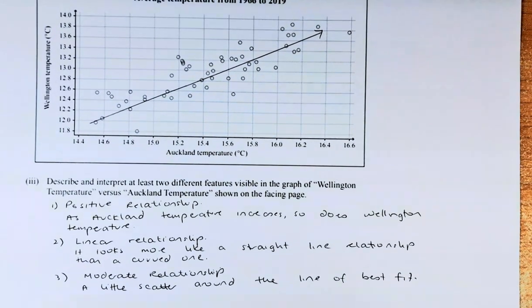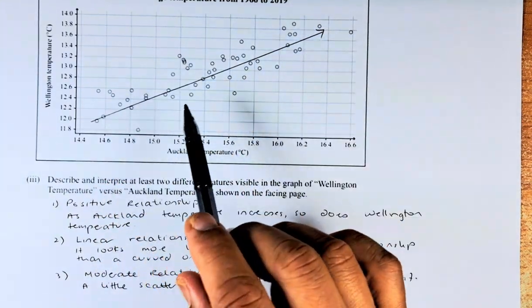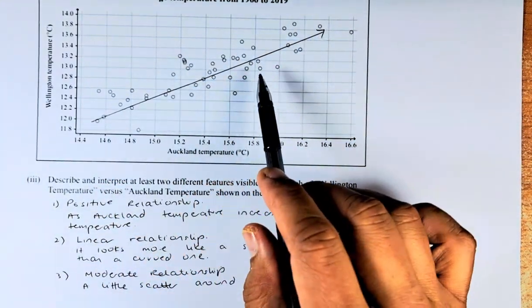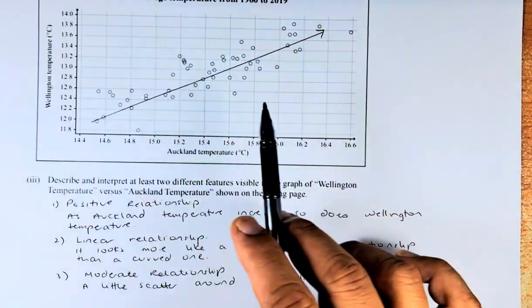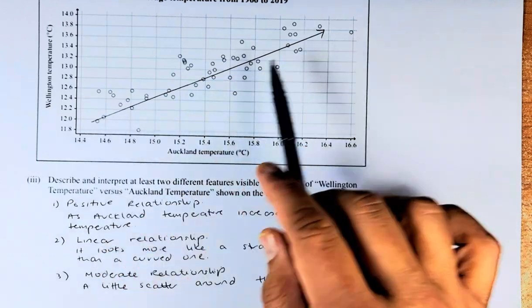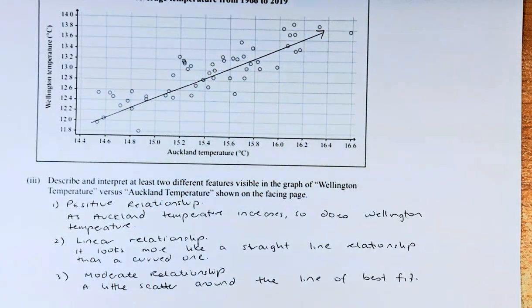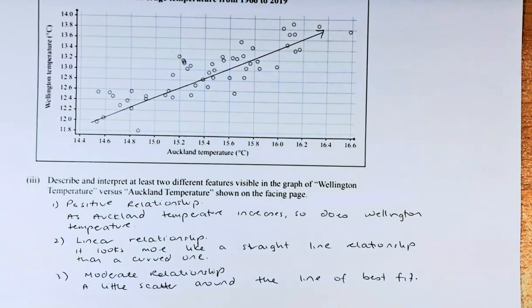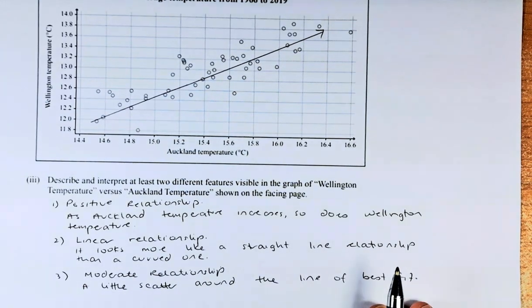And last but not least, we need to talk whether it is strong, moderate, or weak. If every point lies on a straight line, it is strong. If it's a bit scatter, like our case, it's a moderate relationship. And if it's all over the place and you do not know where to draw the line of best fit, then it's a weak relationship. In our case, you can see that they are all in the same direction, so a bit of scatter, and I would say that this is a moderate relationship. So that is how you find the relationship between the Auckland temperature and the Wellington temperature.